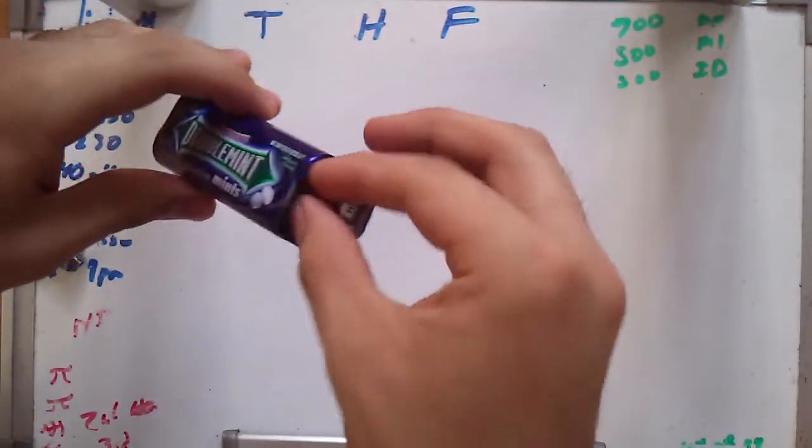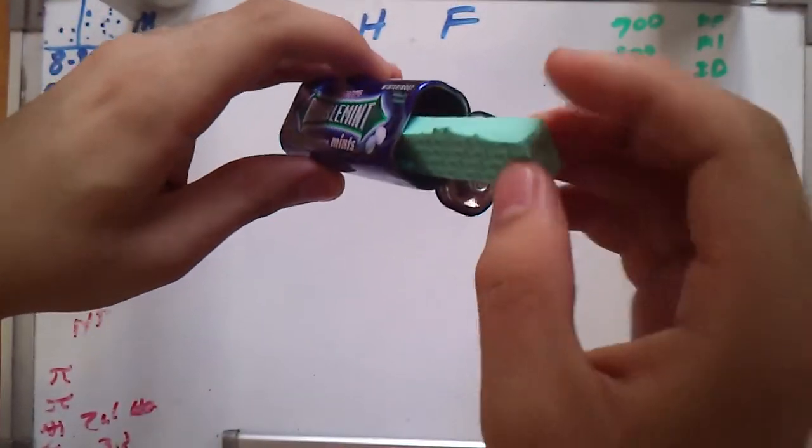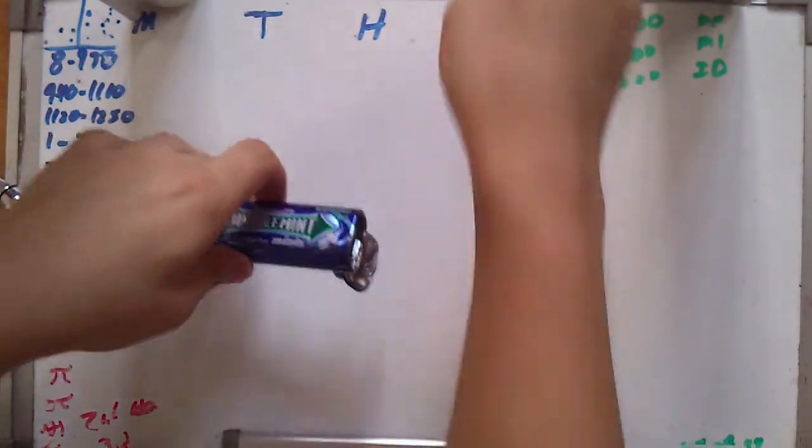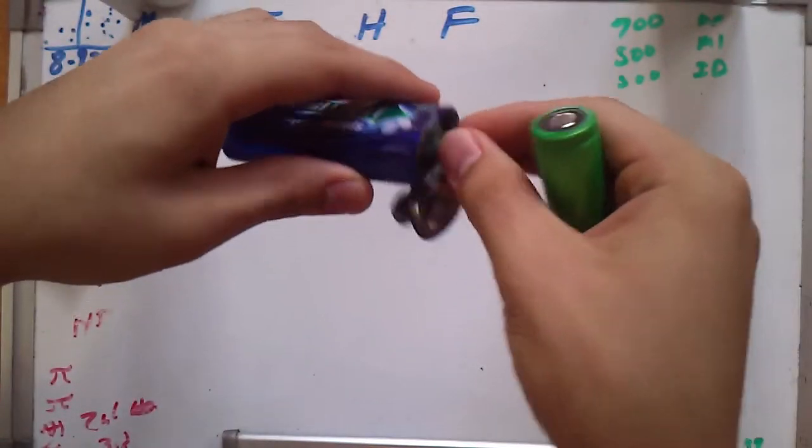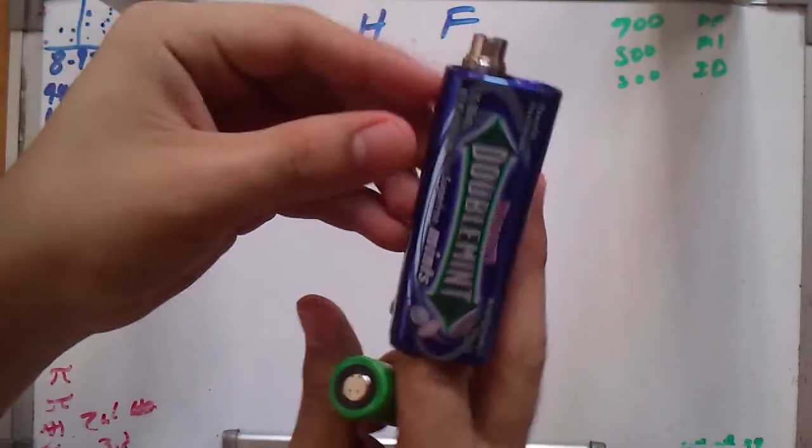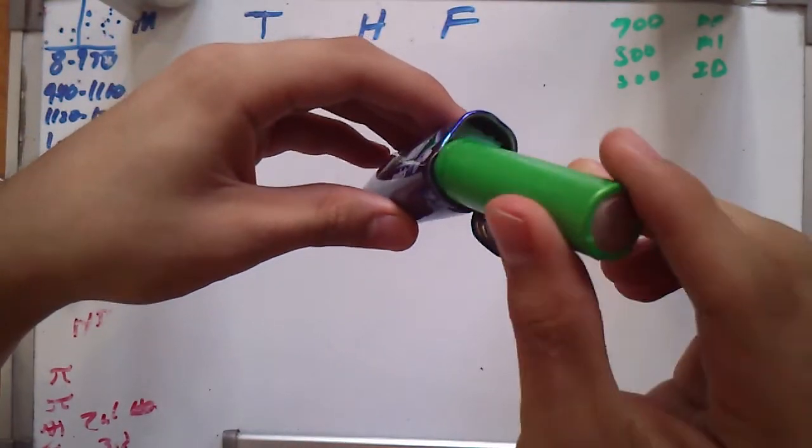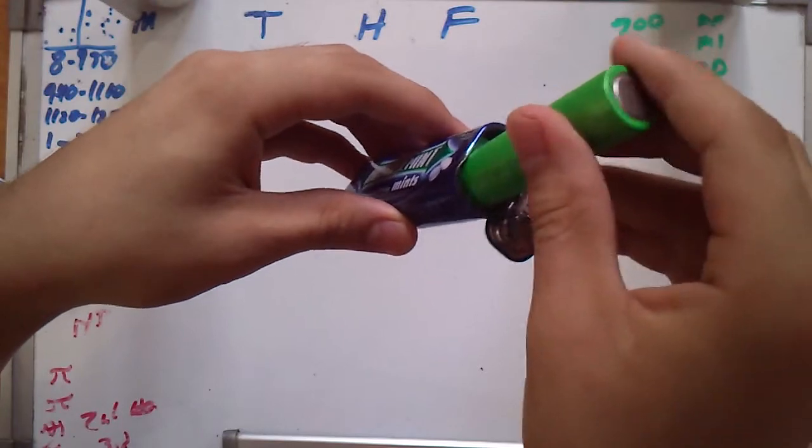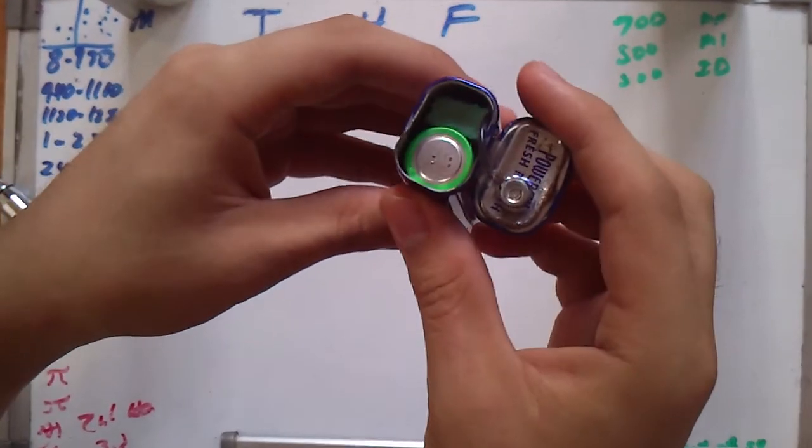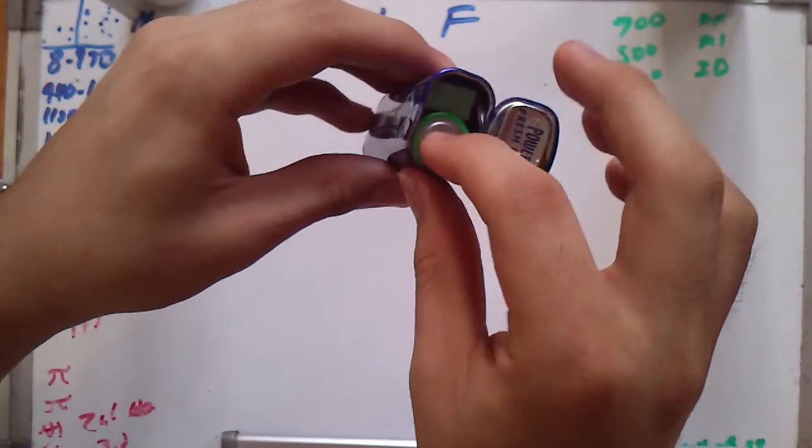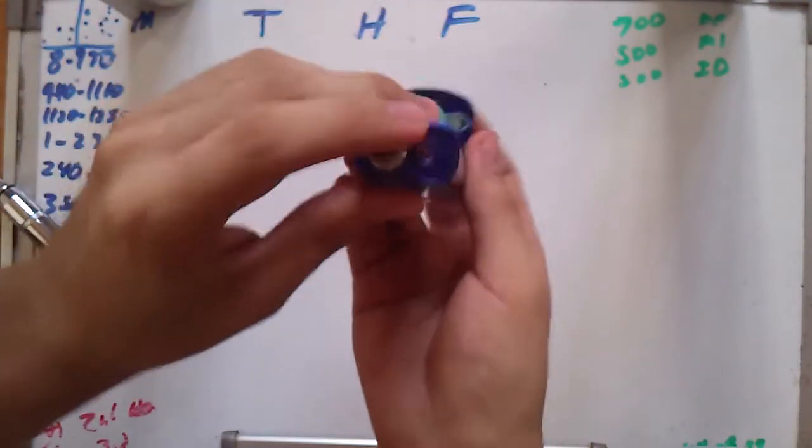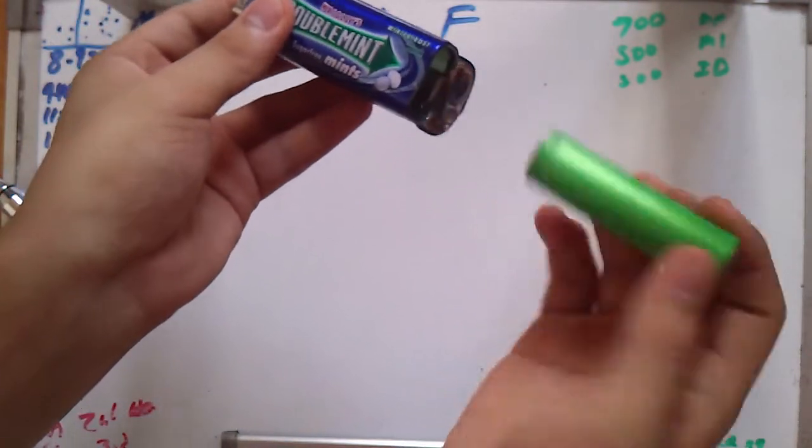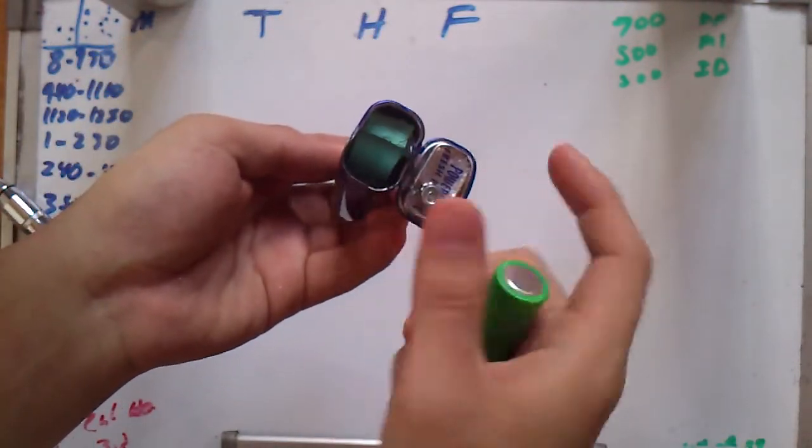Anyway, as you can see I have a filler right here. This thing is used to align the battery, so here, align here, and in it goes. It doesn't move much. And that's just the purpose of that thing.